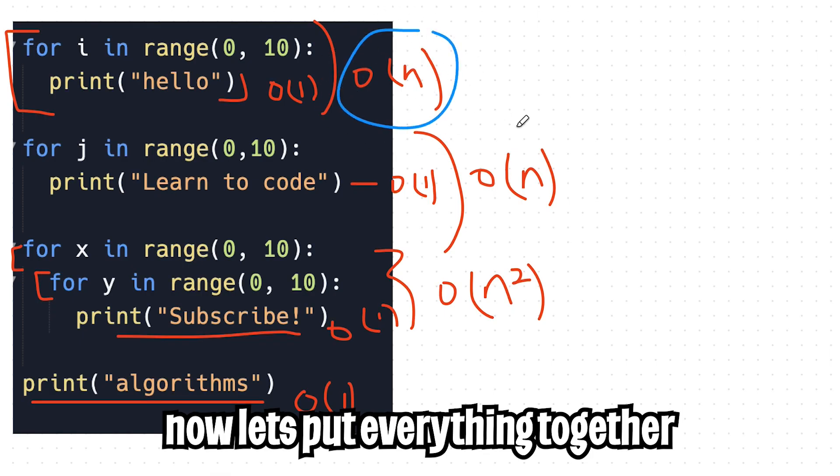And finally we have this last print statement, which is just O of 1. Now let's put everything together. So we have O of N, O of N, O of N squared, and O of 1.